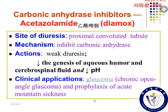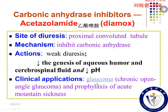Carbonic anhydrase inhibitors, like acetazolamide, act on the proximal convoluted tubule by inhibiting carbonic anhydrase. They have weak diuretic effects. Because of inhibition of carbonic anhydrase, they can decrease the production of aqueous humor and cerebrospinal fluid and decrease the pH value of these body fluids. Clinical applications of acetazolamide include glaucoma, especially chronic open-angle glaucoma, and prophylaxis of acute mountain sickness.